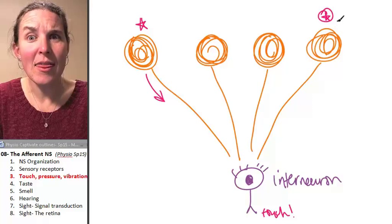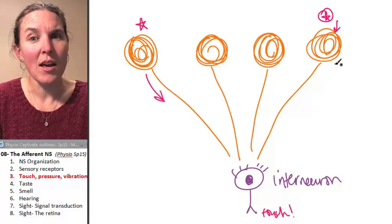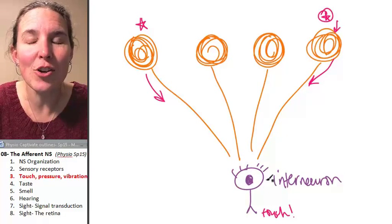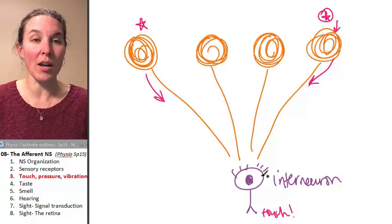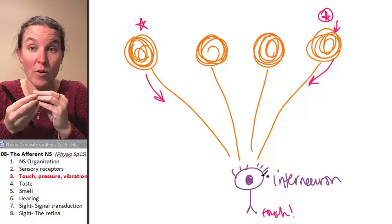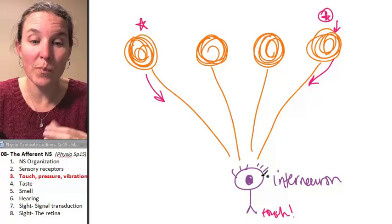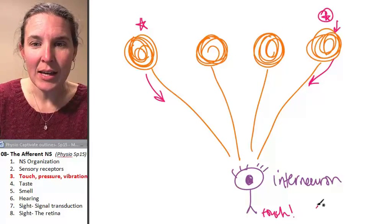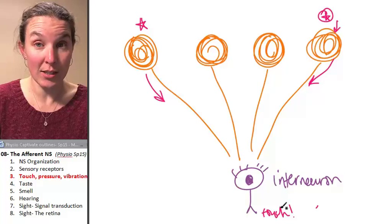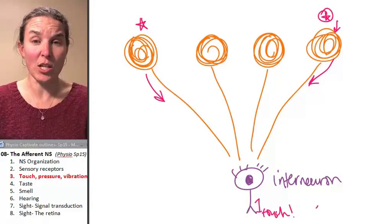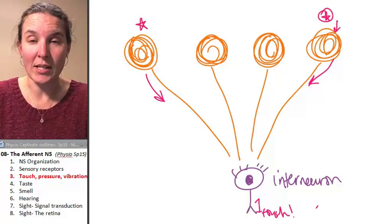If you at the same time touch and activate this Pacinian corpuscle, it's going to send a message to the same neuron, to the same interneuron. One interneuron is receiving all the information from multiple places. And the perception in your brain is not just touch. It's one touch. Not two touches. It's one touch.